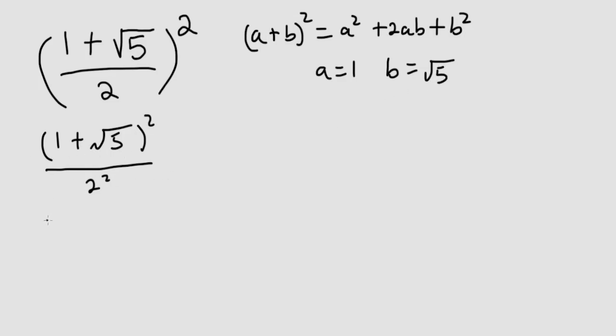So this becomes 1 squared plus 2 times 1 times the square root of 5 plus square root of 5 squared, all over 4.